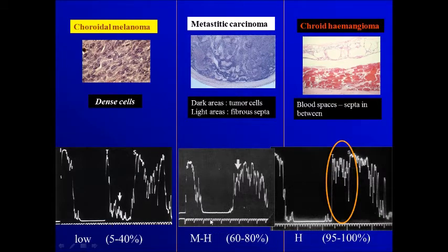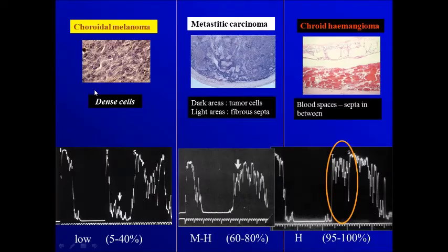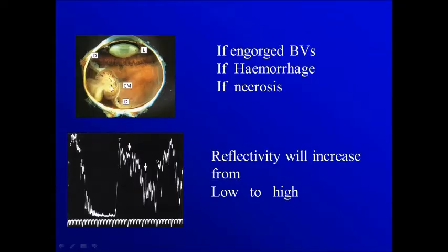So knowing the reflectivity of a lesion, we can figure out how much septa are within that lesion. Sometimes the reflectivity changes — in choroidal melanoma with low reflectivity, if there is hemorrhage, engorgement of the blood vessels, or an area of necrosis, the reflectivity will start to be high.